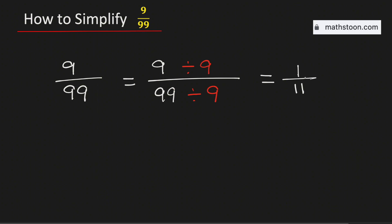And we know that 1 over 11 cannot be simplified further, because there is only one number which can divide both 1 and 11, that is 1.